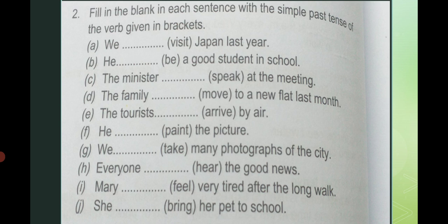Now we are going to do the next exercise about simple past tense. یہاں آپ کو first form دی گئی ہے اور ہم نے ان کو second form of verb میں change کرنا ہے۔ 'We visited Japan last year' — visit کی second form visited۔ 'He was a good student in school' — present tense میں b ہو تو past tense میں was یا were لگائیں۔ تو یہاں 'He was a good student in school.'